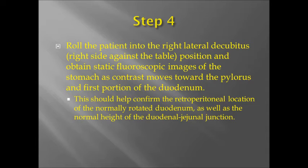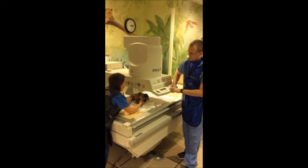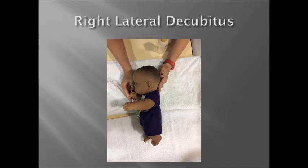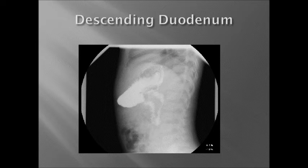Step 4: Roll the patient into the right lateral decubitus position, with the patient's right side against the table, and obtain static fluoroscopic images of the stomach as the contrast material moves towards the pylorus and first portion of the duodenum. This should help confirm the retroperitoneal location of the normally rotated duodenum, as well as the normal height of the duodenal-jejunal junction. Here is an example of right lateral decubitus positioning, and a static fluoroscopic image demonstrating the normal height of the duodenal-jejunal junction.